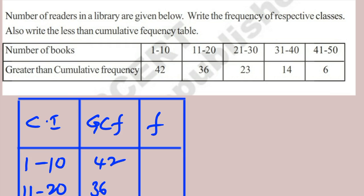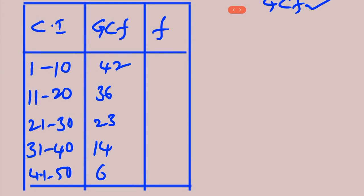Now look at the third problem: the number of readers in a library are given — find the frequency of respective classes and also write the less than cumulative frequency table. Observing the given data: 42 is the highest value, and 6 is the lowest, with values gradually decreasing from top to bottom. Gradually decreasing means these are GCF — greater than cumulative frequencies. Using these GCF values, we first find the frequencies by subtracting from the bottom upwards.